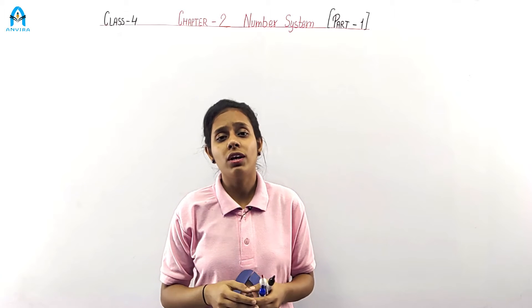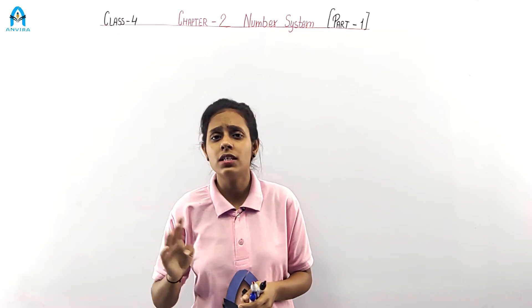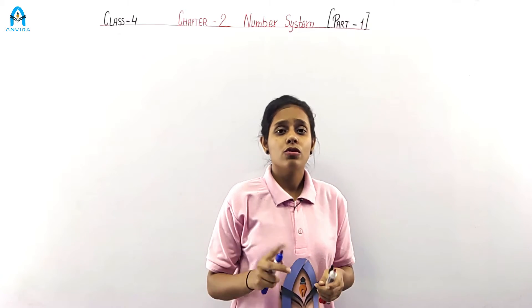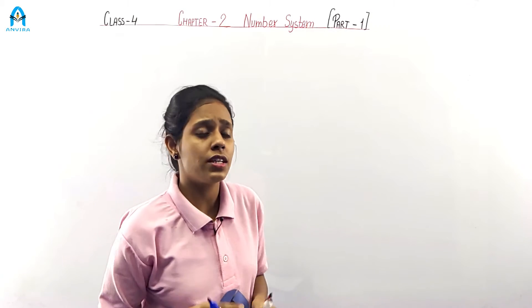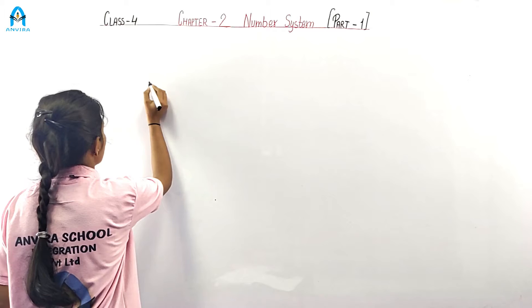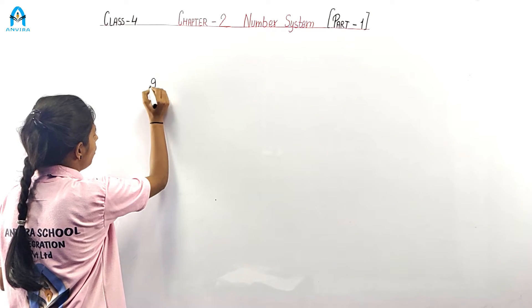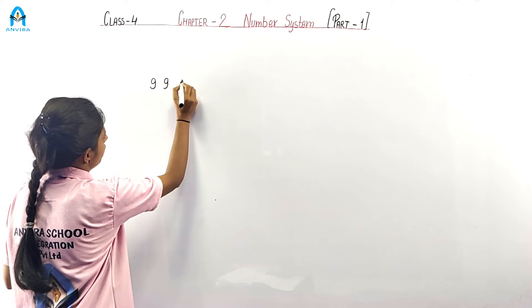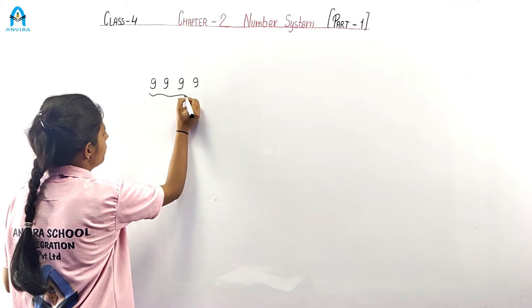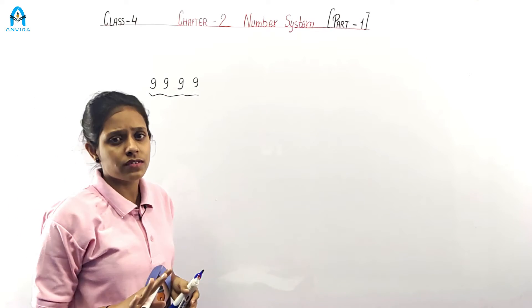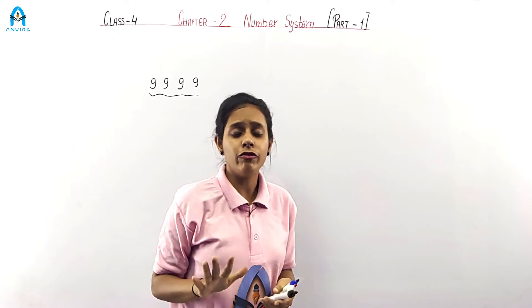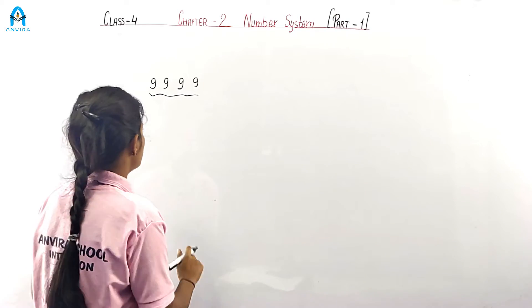So we learned in our previous class about 4-digit numbers. Which is the largest 4-digit number? The largest 4-digit number is 9999. Now let's make a 5-digit number from this.